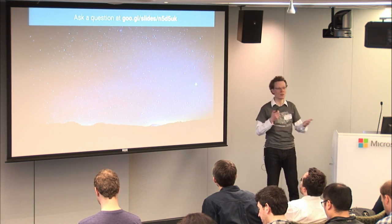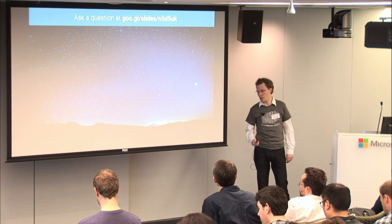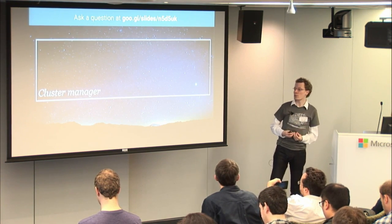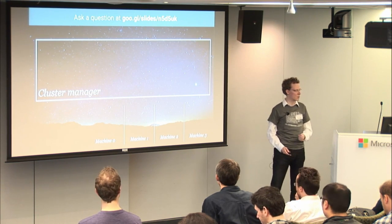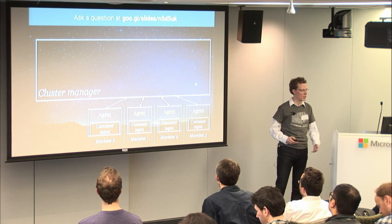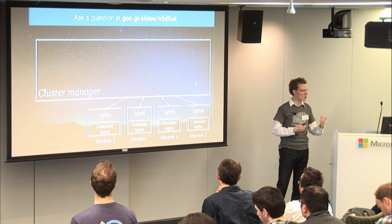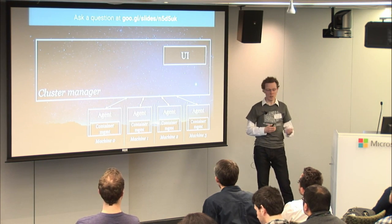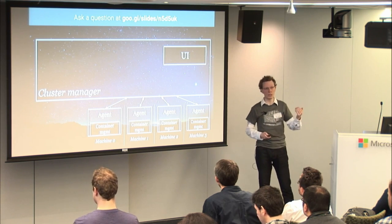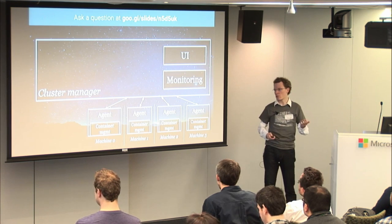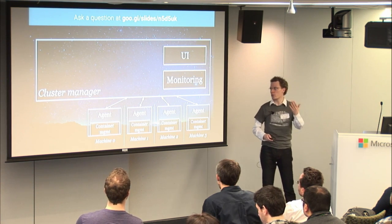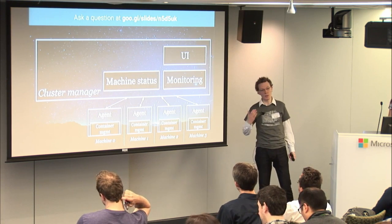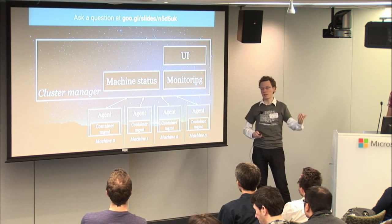We're all here to talk about containers — to learn about how to manage them, how to work with them. Typically in a container orchestration system or cluster manager, it looks in a simplified way a little bit like this. You have some machines. You have a bunch of agents on each machine that run there and report back to some centralized orchestration system or cluster manager to say what's up on these cluster machines. And in that centralized cluster manager, you typically have some bits of UI that allow you to actually manage your stuff.